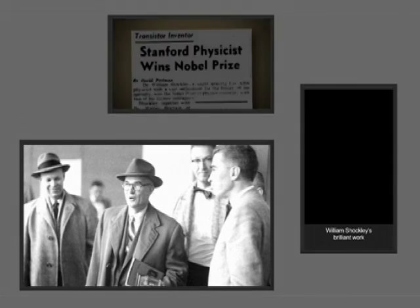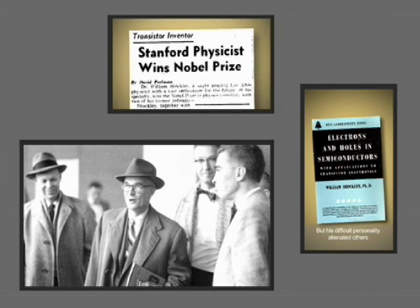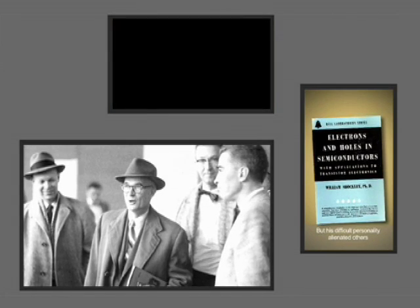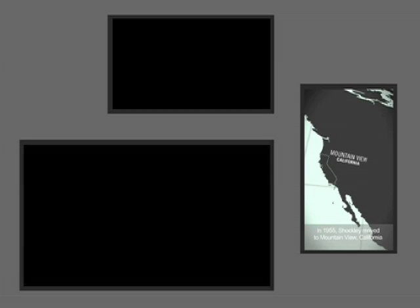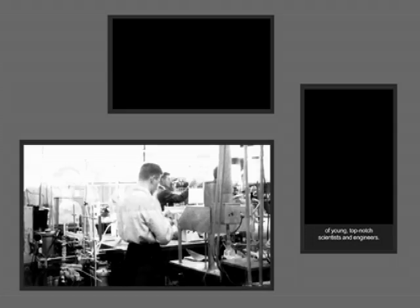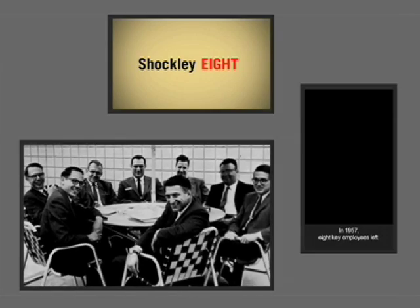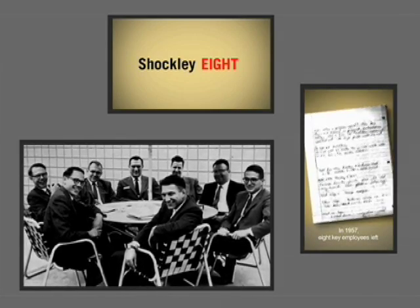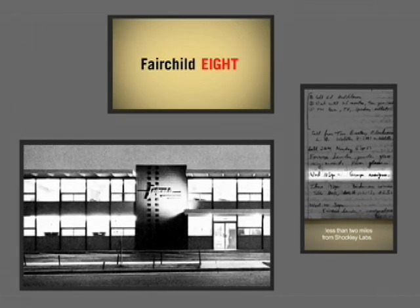William Shockley's brilliant work on transistor technology was trailblazing, but his difficult personality alienated others throughout his career. In 1955, Shockley moved to Mountain View, California and founded Shockley Semiconductor Laboratory. He rounded up a team of young, top-notch scientists and engineers, but Shockley's style quickly frustrated his new team. In 1957, eight key employees left to launch Fairchild Industrial Technology, less than two miles from Shockley Labs.